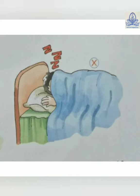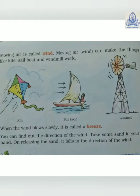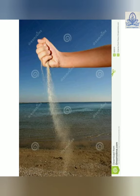Moving air is called wind. Because of the wind we can fly kites, we can sail boats, and moving air makes the windmill work. When the wind blows slowly, it is called a breeze. You can find out the direction of the wind — take some sand in your hand, and on releasing it, the sand falls in the direction of the wind.